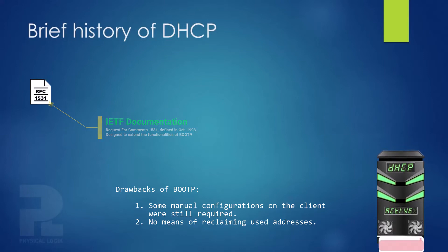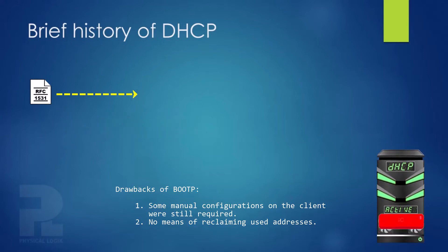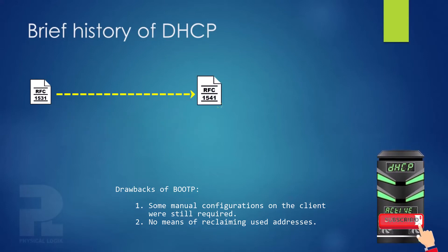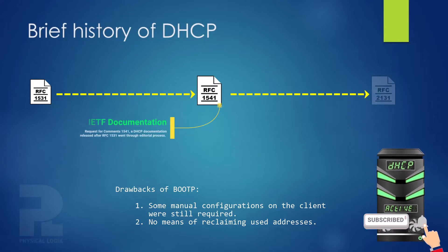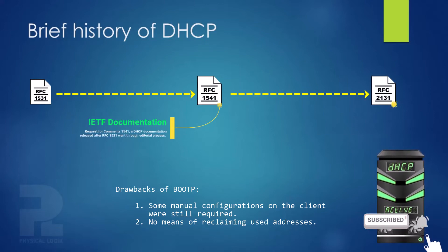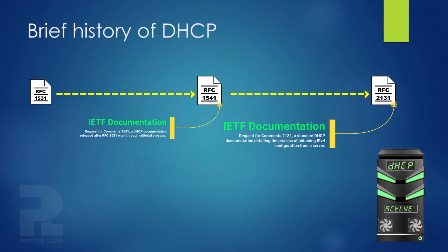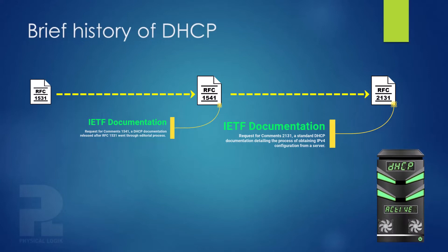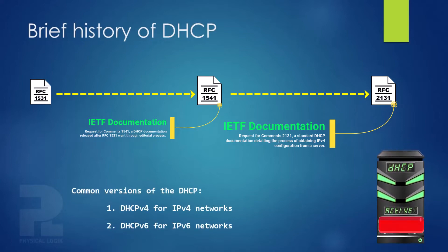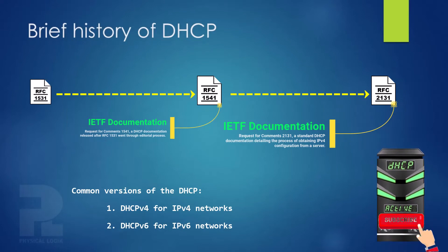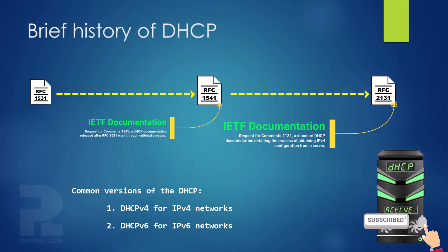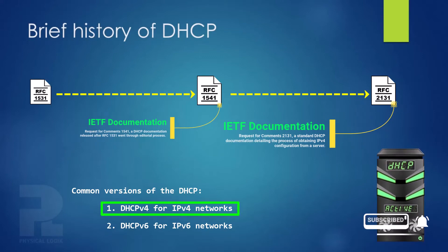As the protocol gained popularity, it went through some adjustments and developments, and four years later RFC 2131 was released. DHCP became a widely adopted standard for configuring devices till this day. The two versions of DHCP are DHCP version 4 for IPv4 networks and DHCP version 6 for IPv6 networks. This series only covers the DHCP version 4 application.